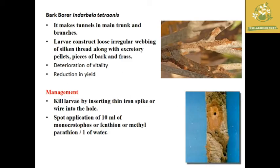The next pest is the bark borer, with scientific name Inderbela tananaosis. It makes tunnels in the trunk and branches. Larvae construct irregular webbing and circling of thread along excretory pellets, causing a reduction in Amla yield. Management includes killing larvae by inserting a thin iron spike or wire into the hole, and spot application of 10 ml of monophos, or phenthoate, or methyl parathion at 1 ml per liter of water.